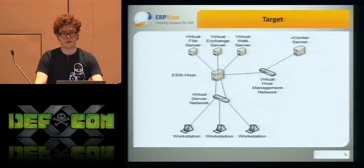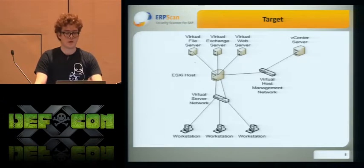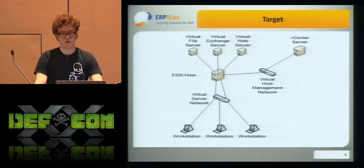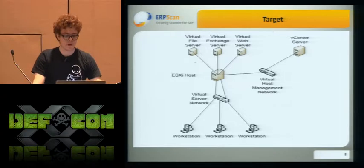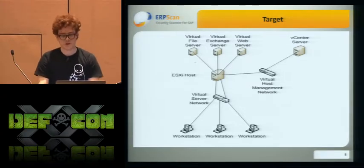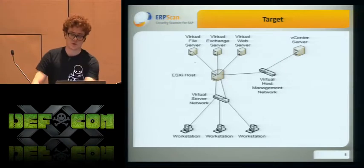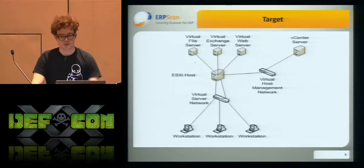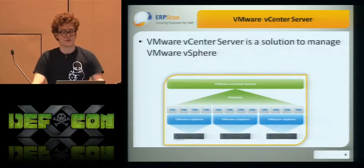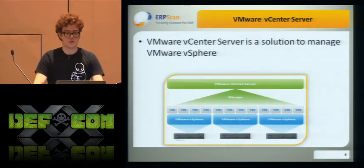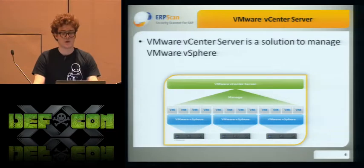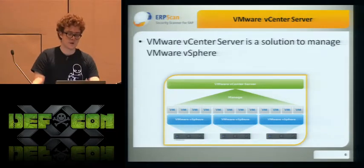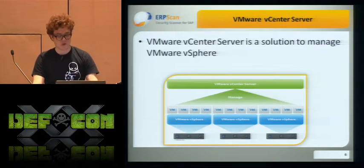One day we had a network — a big network — and all the infrastructure was built on VMware: ESXi hosts and vSphere. Everything seemed pretty secure, all patched with the latest updates. There was no default password or anything stupid. So we decided to try attacking the vCenter server, because vCenter is the solution to manage vSphere. If we can hack vCenter, we can hack all VMs and all the infrastructure.